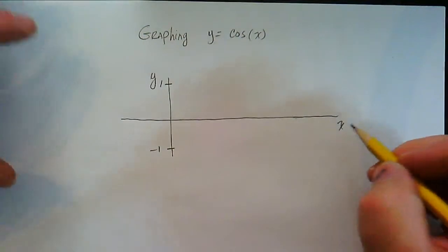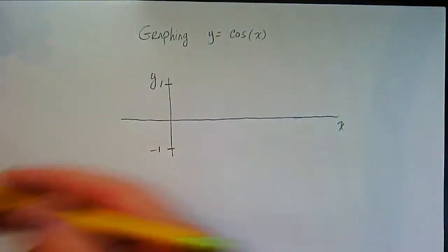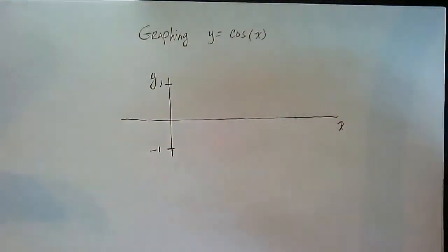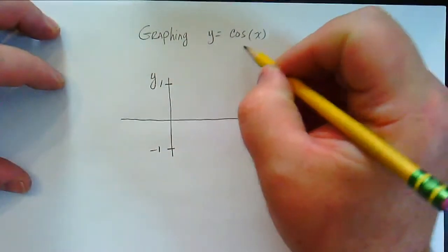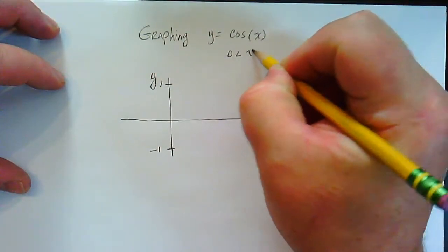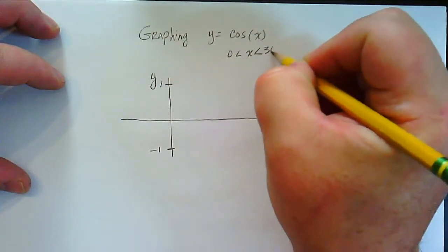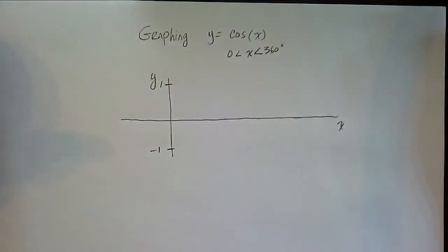And we can put any angle we want in, left and right, so you can go to negative infinity, positive infinity. Usually what we do is we just do 1 period, we say 0 to 360 degrees, right? So that's what we're going to do here, this is called 1 period.